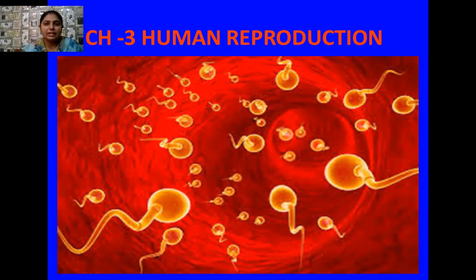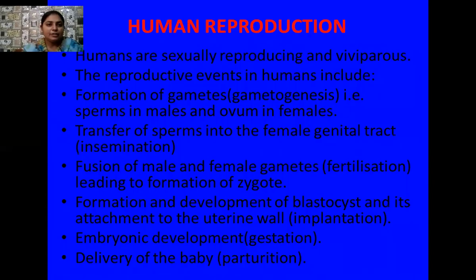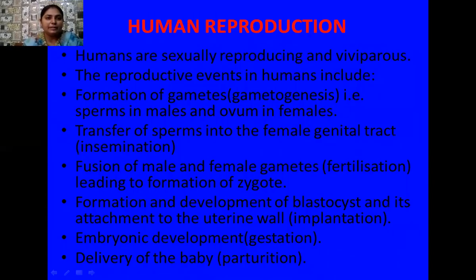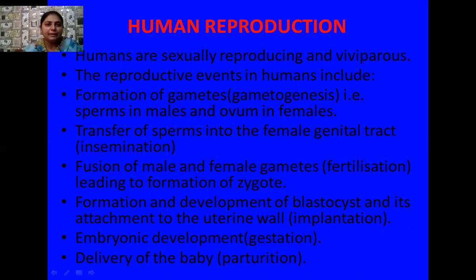So let's start the revision of chapter 3, human reproduction. Humans are sexually reproducing organisms, as all of you know very well, and they are viviparous, meaning they give birth to their young ones or offspring. Let's look at the various events of their reproductive system.